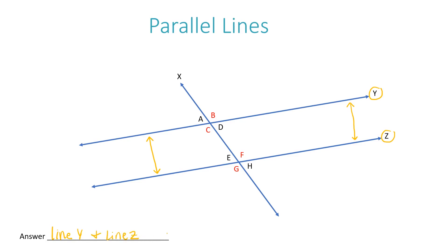You could also write that as line Y and line Z using the line symbol. Whenever you're notating a line using the symbol, you basically draw a line above the name of the line and make sure to put two arrows on the ends of the line that you've drawn.